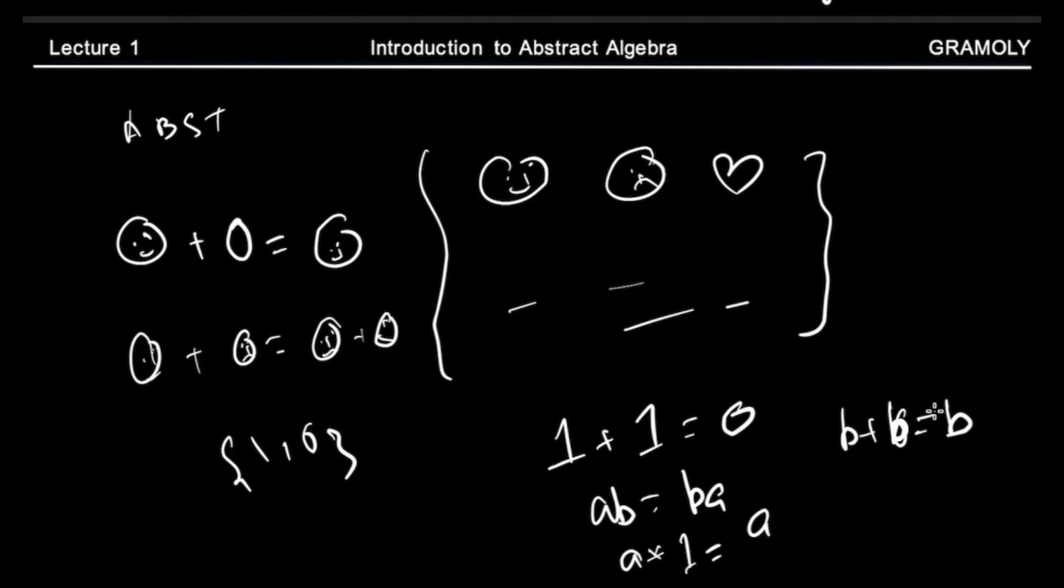We can say more things about integers and we could have added those nice properties of integers to this what we call integer-like structure. For example we know that every integer has a negative, so like a plus minus a equals zero, but this fails for multiplication since any number other than one or minus one wouldn't have any other element in the integers such that a into b equal to one.